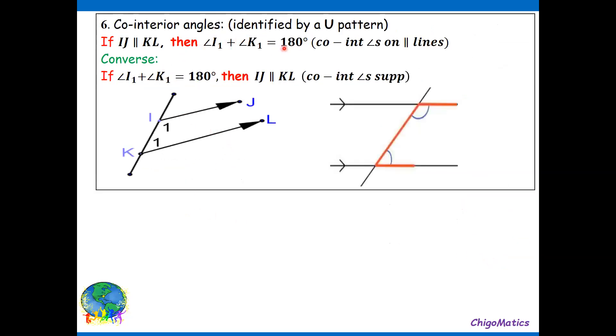Number six, co-interior angles, normally identified by a U. The one in red is the U, then the corners of the U simply mean the angles are supplementary. So we are saying, if IJ is parallel to KN, then angle I1 plus angle K1 is equal to 180. That means they are supplementary. The converse is, if I1 plus K1 is equal to 180, then we can simply conclude that IJ is parallel to KN.